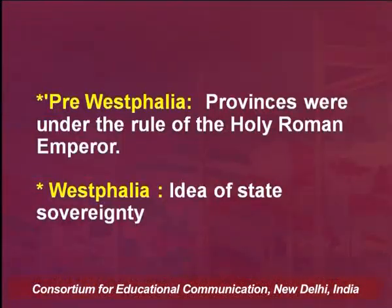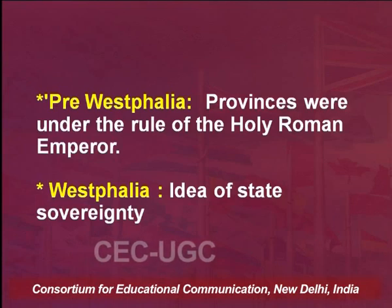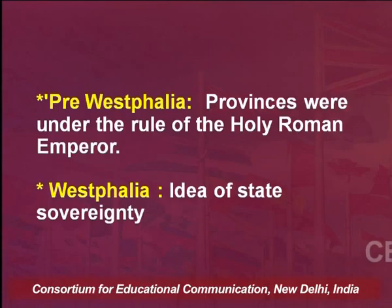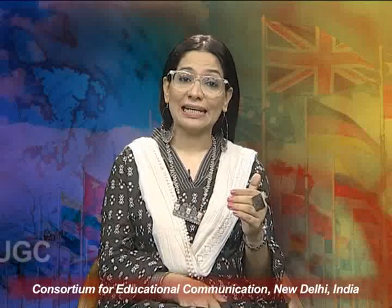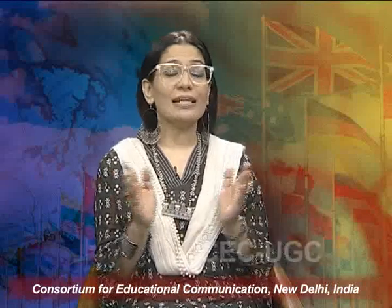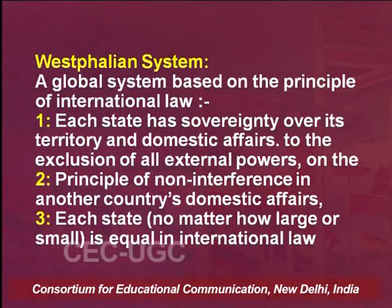In the pre-Westphalian period, provinces were under the rule of the Holy Roman Emperor, and the focus was on the big picture of empires, confederations, and kingdoms. In the Westphalian order, the idea of state sovereignty was given prevalence, and the focus was on the state and sovereignty. The Westphalian system signified a global system based on the principle of international law.